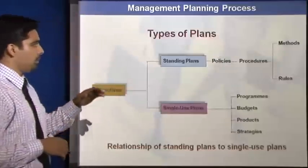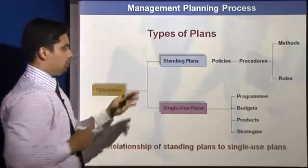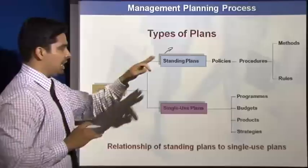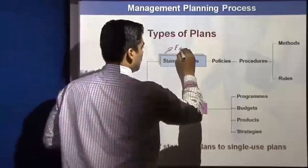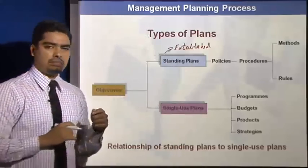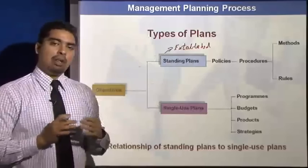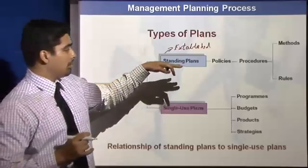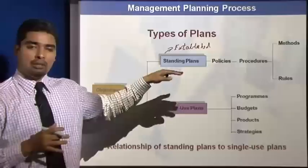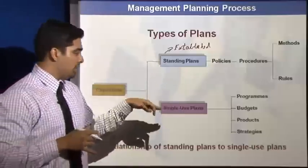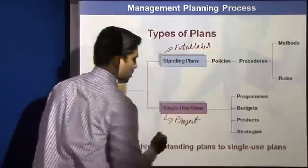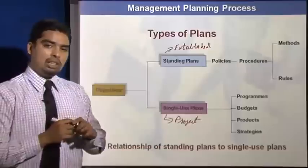Now we are going to look at the types of plans. We have two types: one is the standing plans and one is the single use plans. A standing plan is established and exists for everything — you can consider it to be established. For example, a quality policy — something that remains the same irrespective of any department. So you have a standing plan which is common for every department and every person within the organization. Then you have a single use plan, which is something you have for a project or a particular program — more related to a one-time use.